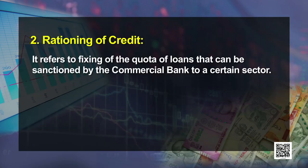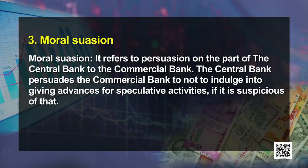The next qualitative tool is rationing of credit. Rationing of credit refers to fixing a quota of credit or loans that can be sanctioned by the commercial bank to a certain sector. For example, if RBI is suspicious of activities in the real estate sector, it will direct commercial banks to fix a quota on lending to real estate. If the central bank is satisfied that no suspicious activity has taken place, it will remove or increase the quota limit.